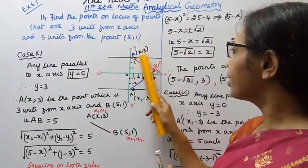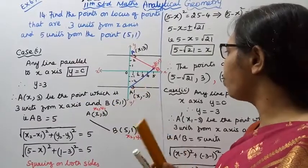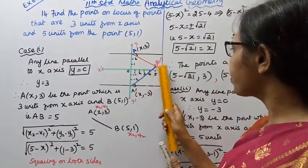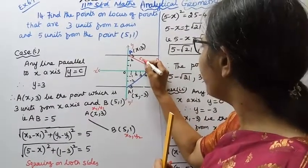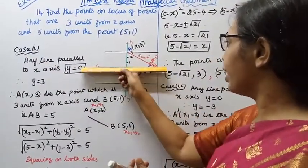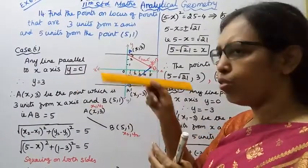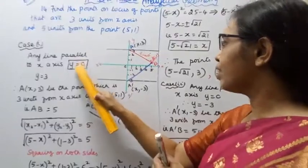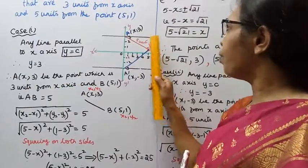Let A(x, 3) be the point which is 3 units from the x-axis, and B be the point (5, 1). The distance AB is 5 units. Case 1: moving upward 3 units. Any line parallel to x-axis gives y = c, that is y = +3. So A(x, 3) is the point 3 units from the x-axis and B(5, 1) is 5 units away.